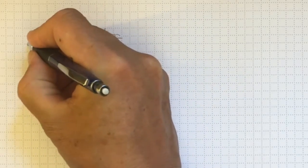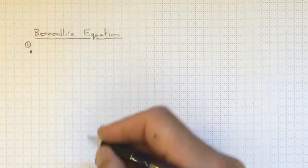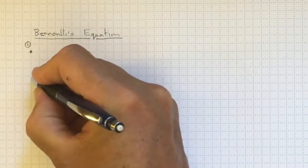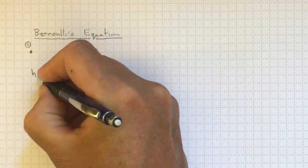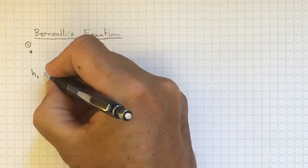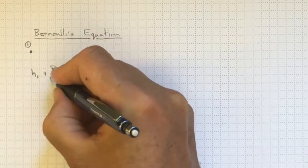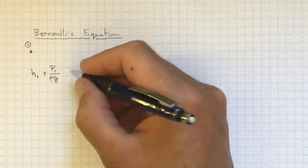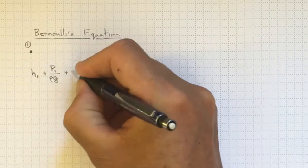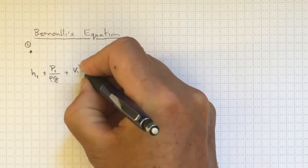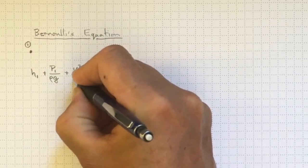So if we call this location 1, then at location 1 this parcel has got some energy because of its elevation, the height at location 1, plus some energy because of its pressure at location 1, higher energy at higher pressures, plus some kinetic energy associated with the square of its velocity at location 1.